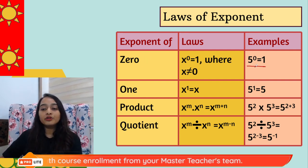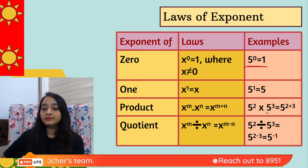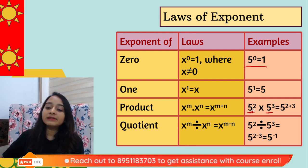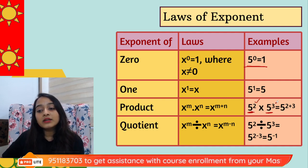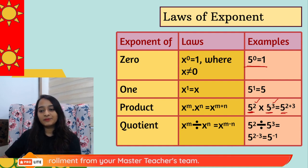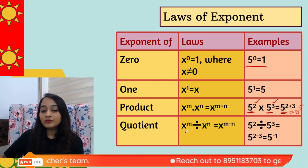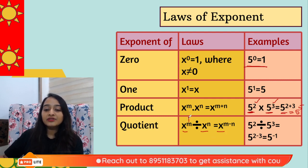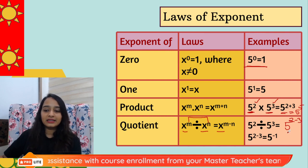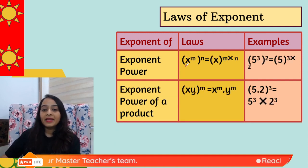Now come the laws of exponents. First: any number to the power zero equals 1; any number to the power 1 is the number itself. Product law: when multiplying two exponents with the same base, keep the base and add the powers — 5² × 5³ = 5⁵. Quotient law: when dividing same-base exponents, keep the base and subtract — 5² ÷ 5³ = 5^(2−3) = 5^(−1).